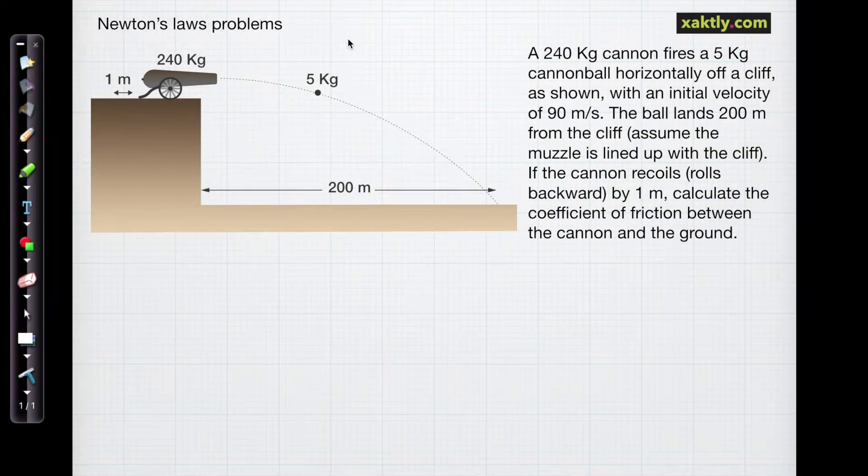This is an interesting Newton's law problem. It involves a lot of different things. We've got a cannon sitting at the edge of a cliff. It's going to fire its projectile horizontally, and that projectile is going to land 200 meters away. We have initial velocity for that projectile, and the cannon is going to roll backwards and recoil by one meter and then stop.